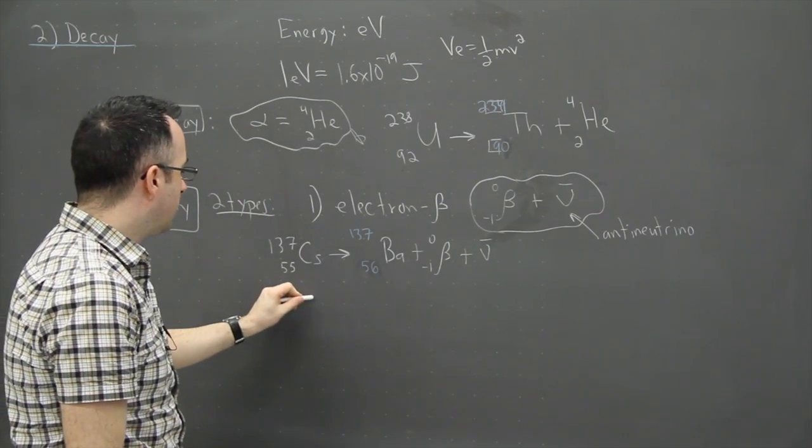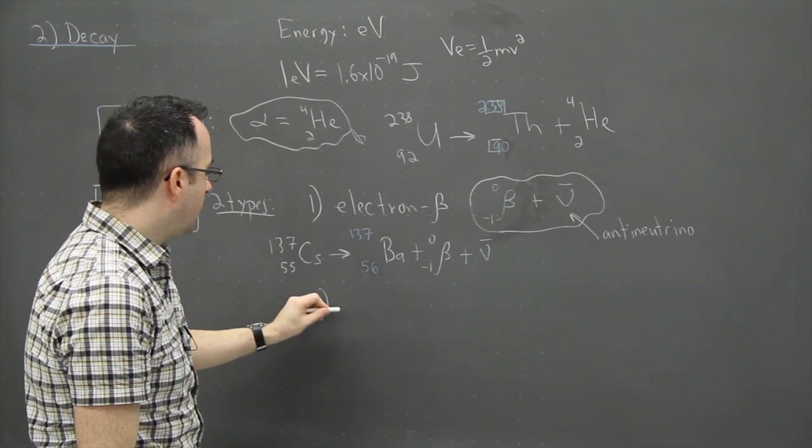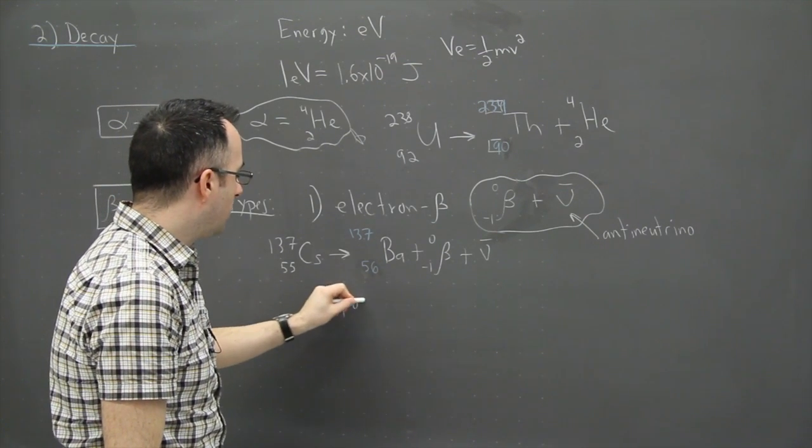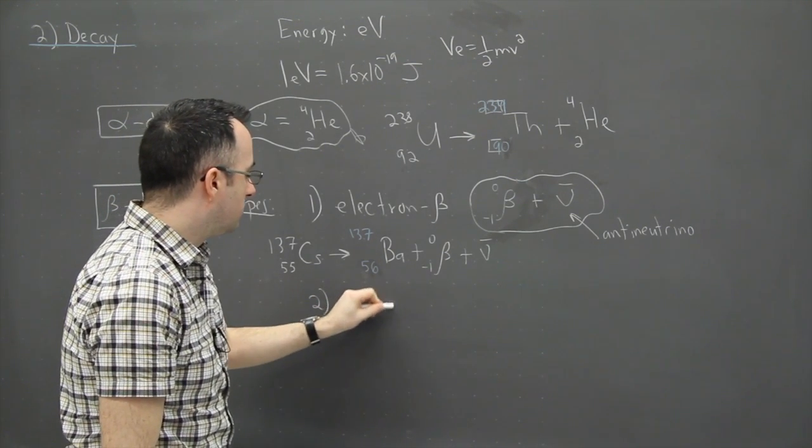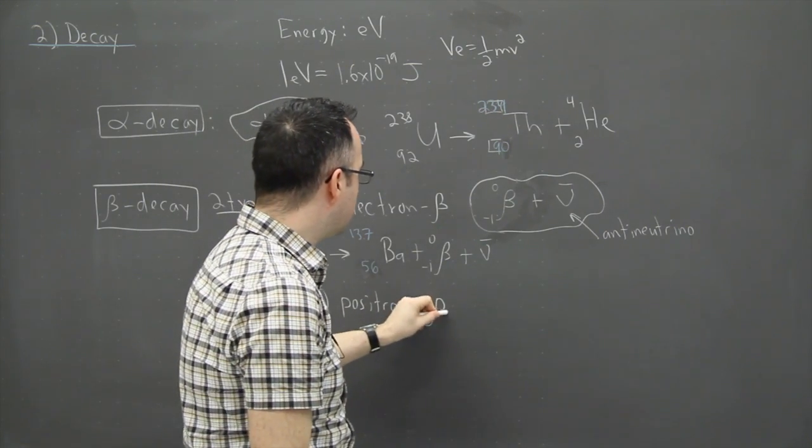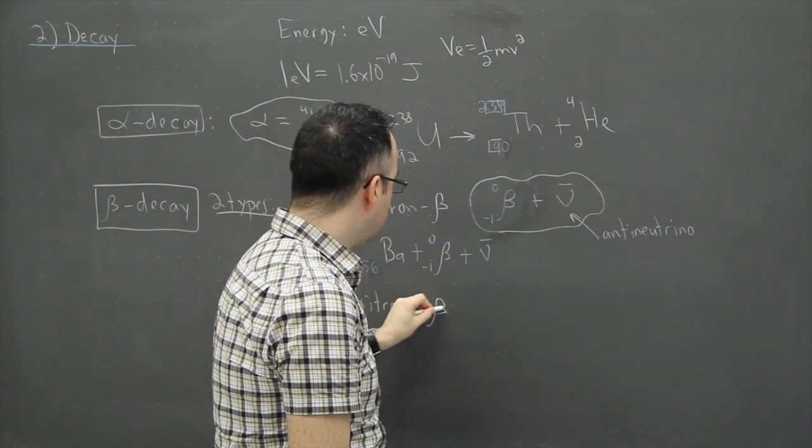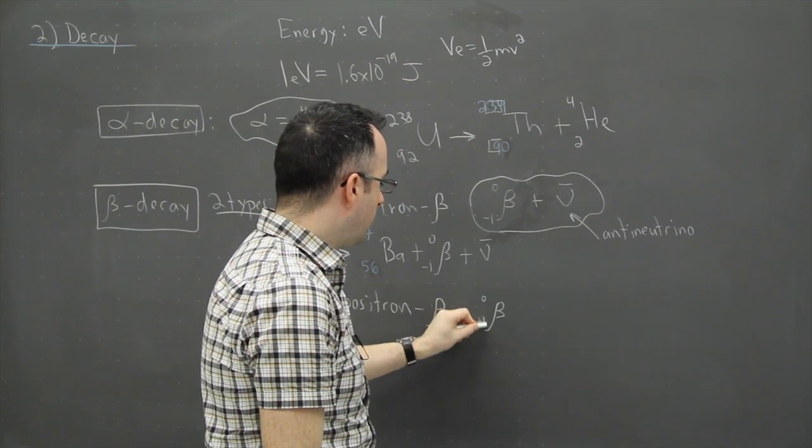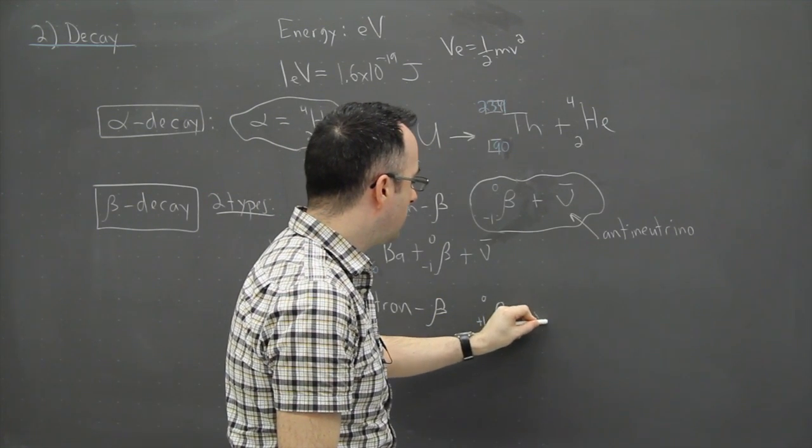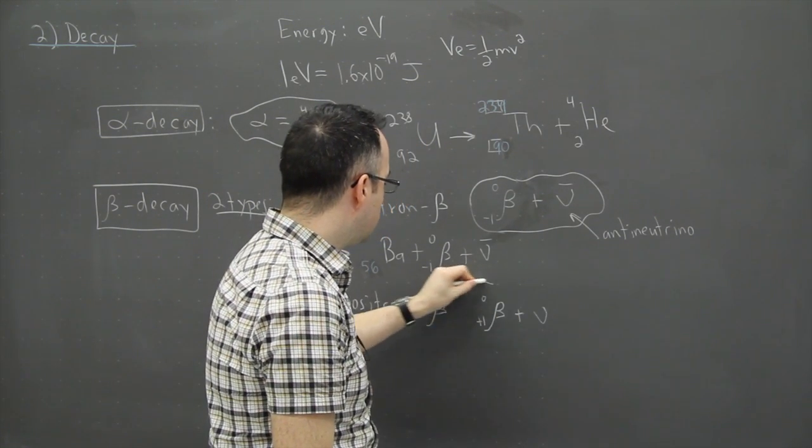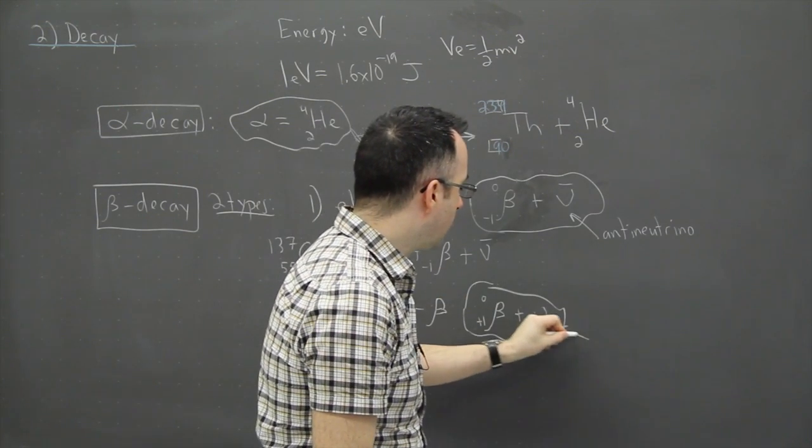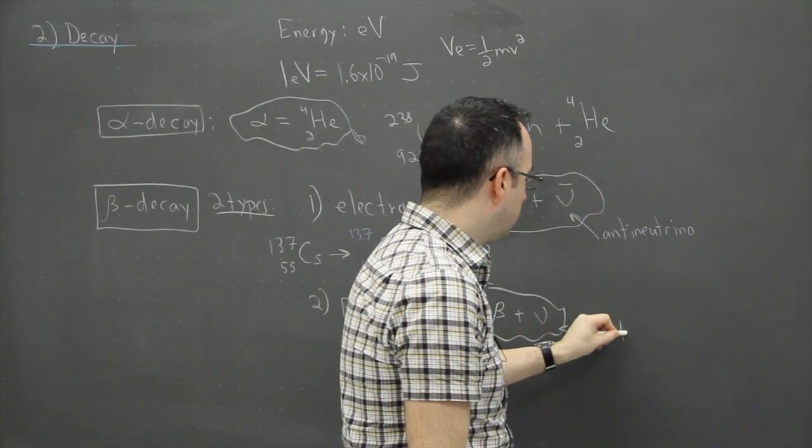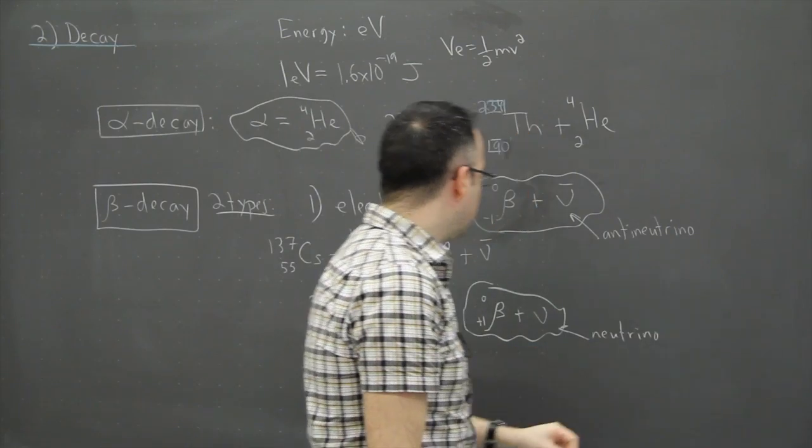Now we also have a second kind of beta decay, and that's called positron. That sounds cool, huh? Positron beta decay. So there, like the electron beta, it has a zero on the top, but this is a plus one on the bottom, and it gets a regular neutrino. So this is just called a regular neutrino here that gets kicked out here.